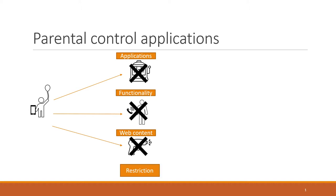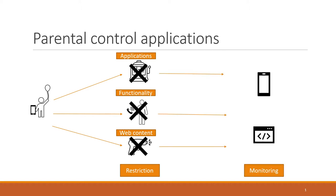Restriction applications are often installed either on the parent device for when the child is using it, or on the child's own phone. This allows parents to restrict access to applications that might be dangerous. When the child tries to access a restricted application, they would only see a banner saying that the application cannot be accessed. The other type are monitoring applications, which not only block content on the device, but also collect information about the child's phone usage. Reports can be accessed on the parent device using a companion app or on websites made available by developers.